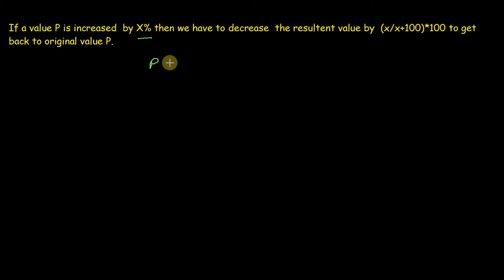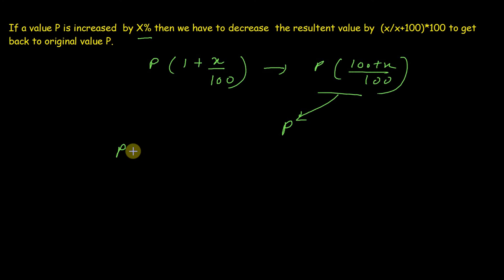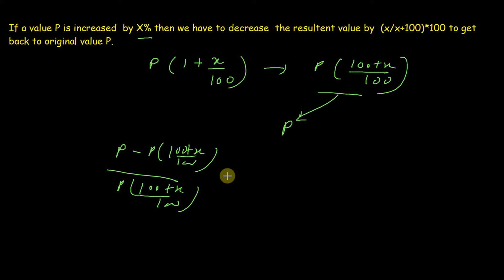We can also write the final value as P multiplied by (100 plus X), divided by 100. According to the statement, we are going from that resultant value back to P. Using the percentage change formula — final value P minus initial value, divided by initial value — after solving, this gives us minus X divided by (100 plus X), multiplied by 100 percent. The minus sign again shows the decrease, and this proves the statement.